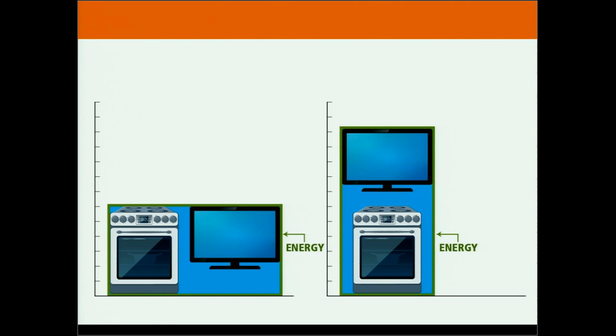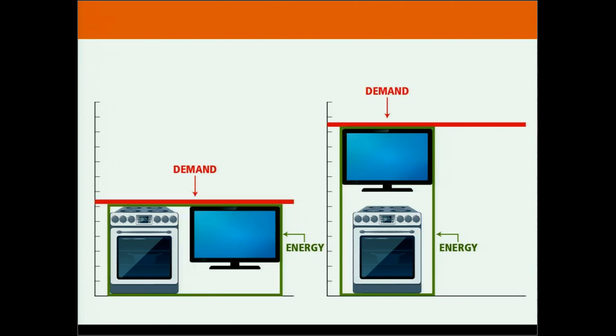But in terms of demand, Joe places a greater demand on the system. What is demand? Demand is the highest amount of electricity used over the period. And we see that Joe's use is higher because he uses appliances at the same time, rather than Mary, who uses one after the other. Now that may be interesting, but why is that important?